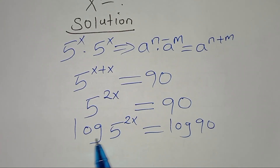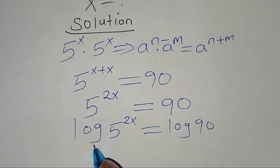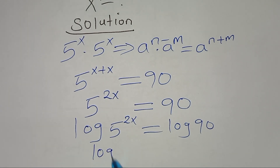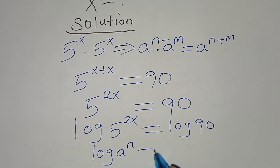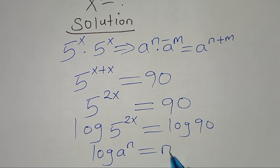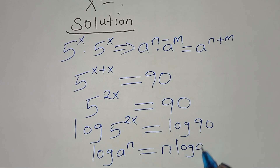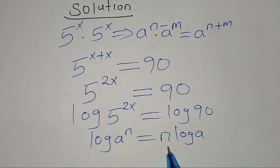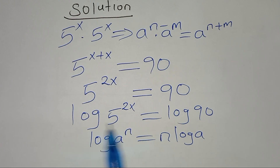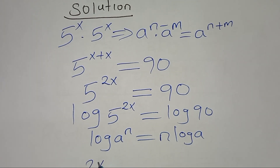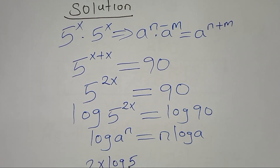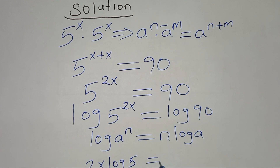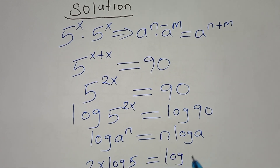Now, log of 5 to the power 2x is in the form of log a to the power n, which you can express as n times log a. Applying this power rule property, we find that log 5 to the power 2x becomes 2x times log 5, and this is equal to log 90.